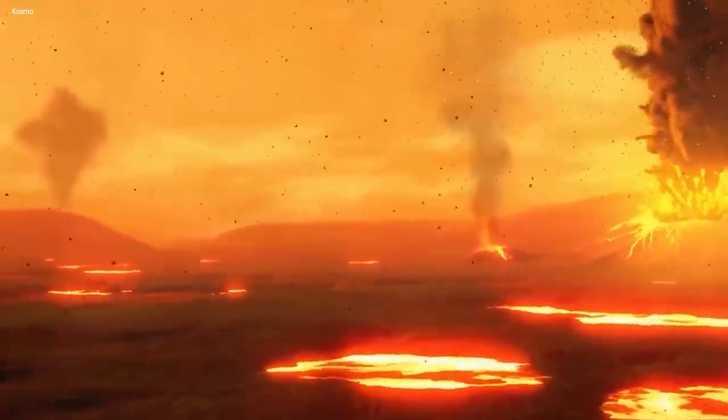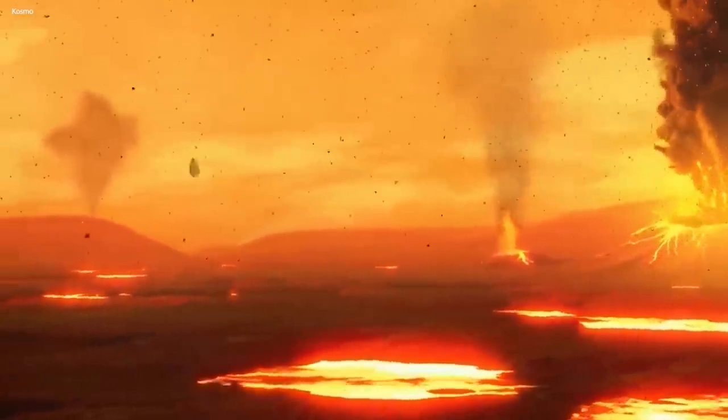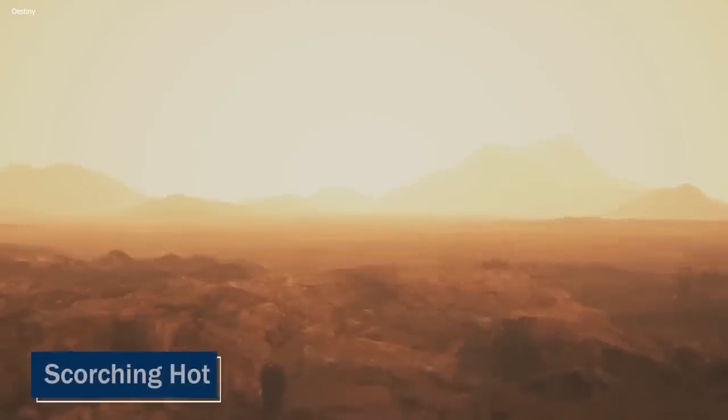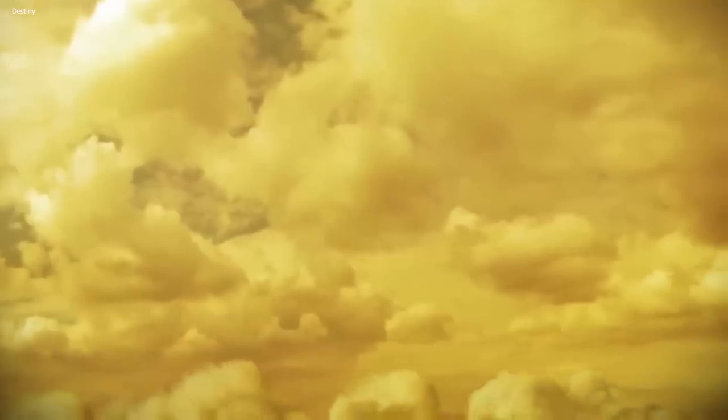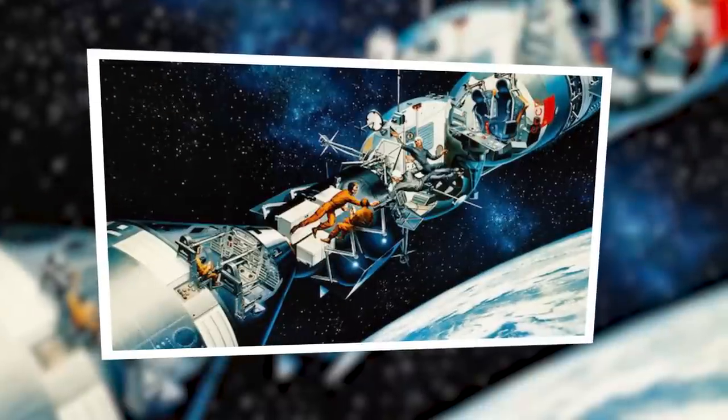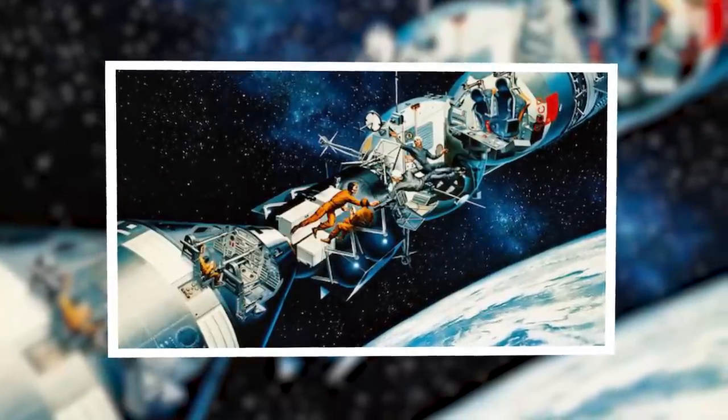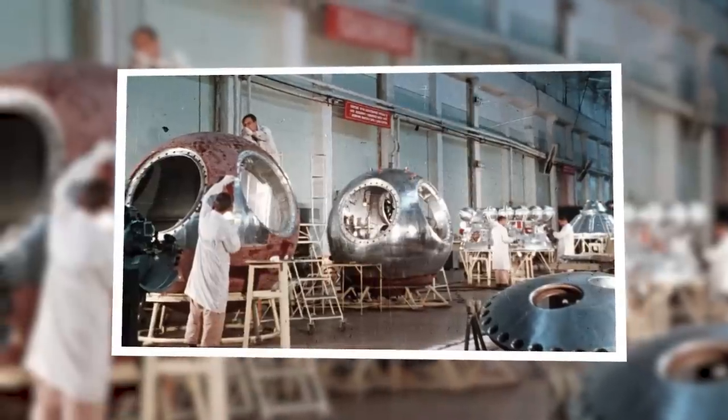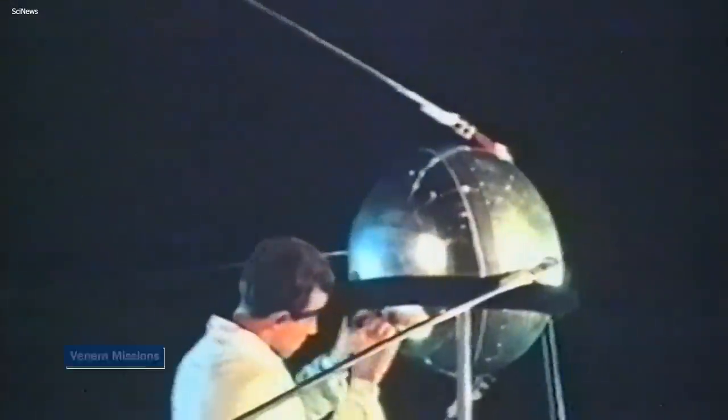But it wasn't going to be an easy feat. Venus was known for its incredibly harsh conditions: scorching hot temperatures, thick clouds of sulfuric acid, and crushing atmospheric pressure that could crush a human being like a pancake. But the Soviet Union was undeterred. They had a plan, and it involved sending a spacecraft to Venus. It was a bold move, to say the least, but it was the start of the Venera missions.